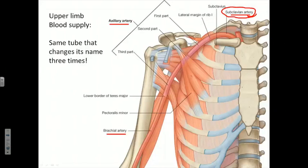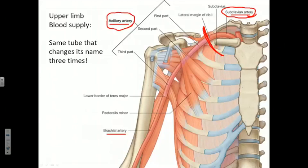The subclavian artery gives rise to small branches supplying muscles and skin on the posterior aspect of the shoulder. It changes its name as it crosses the lower border — the lateral margin — of the first rib, becoming the axillary artery, which runs through the armpit or axilla intermingled with the branching pattern of the brachial plexus. At the lower border of the teres major tendon, it changes name again to the brachial artery, which courses through the arm.